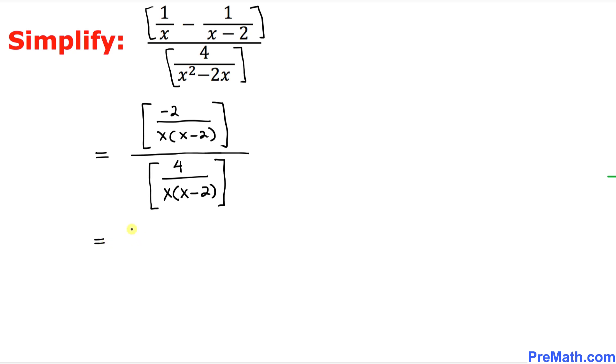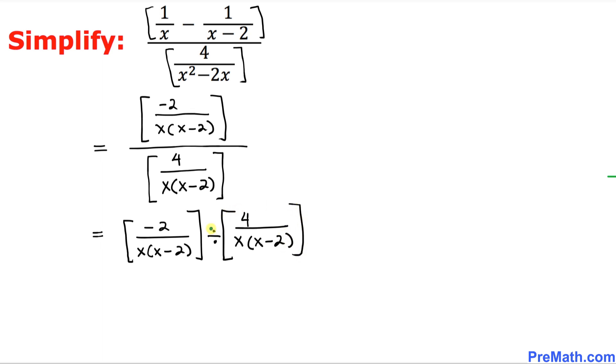And now these two fractions could be written a little bit differently. Let me show you how. I'm going to write down the top bracket as negative two divided by x times x minus two. And then, since this is dividing, I can put a division notation this way, and I can put down over here four divided by x times x minus two.